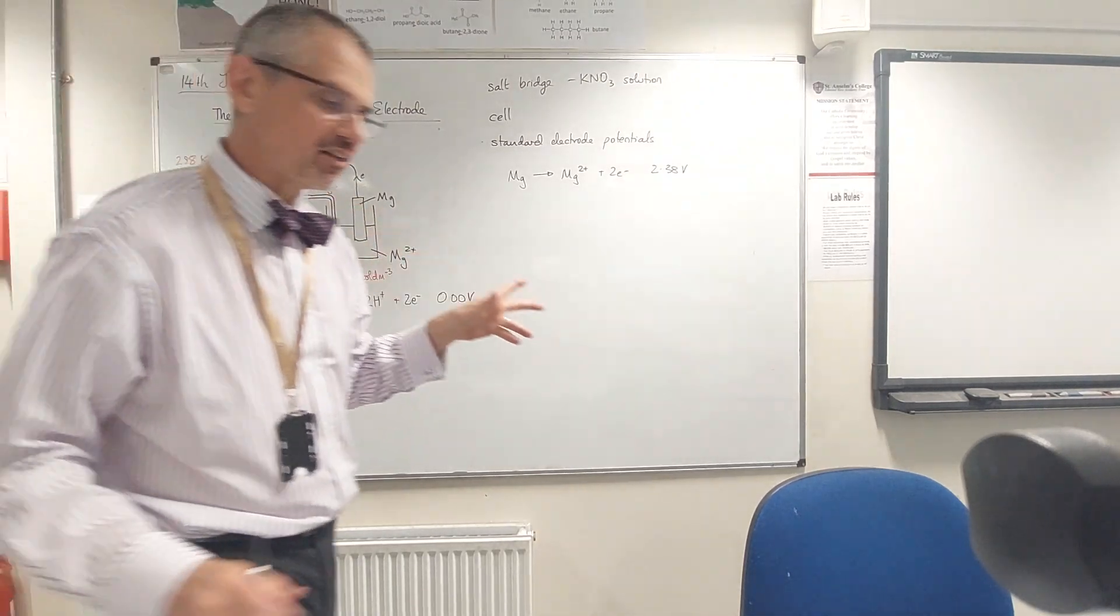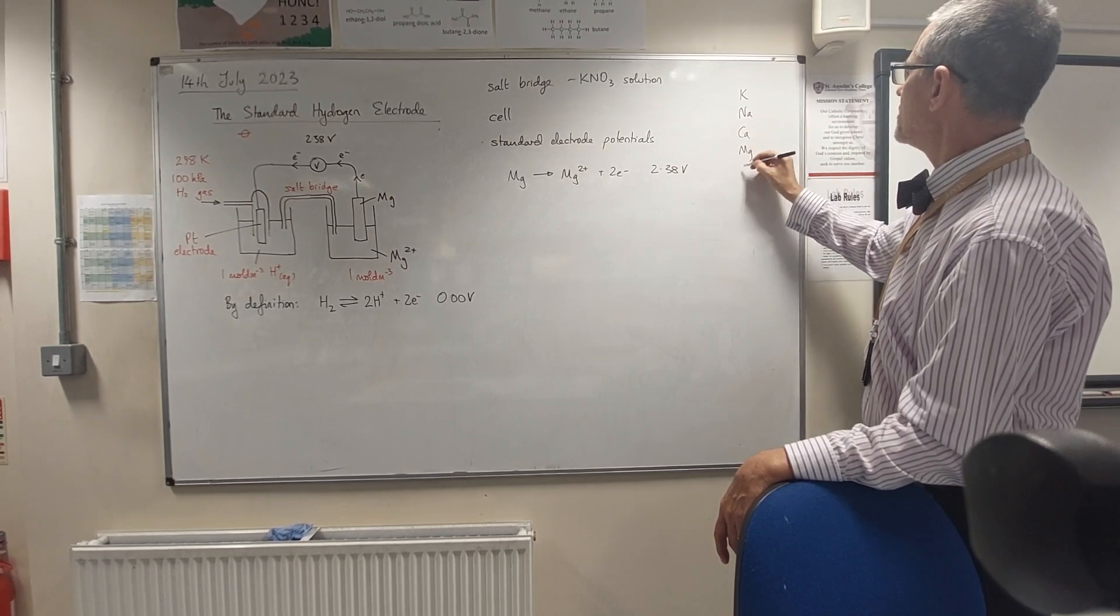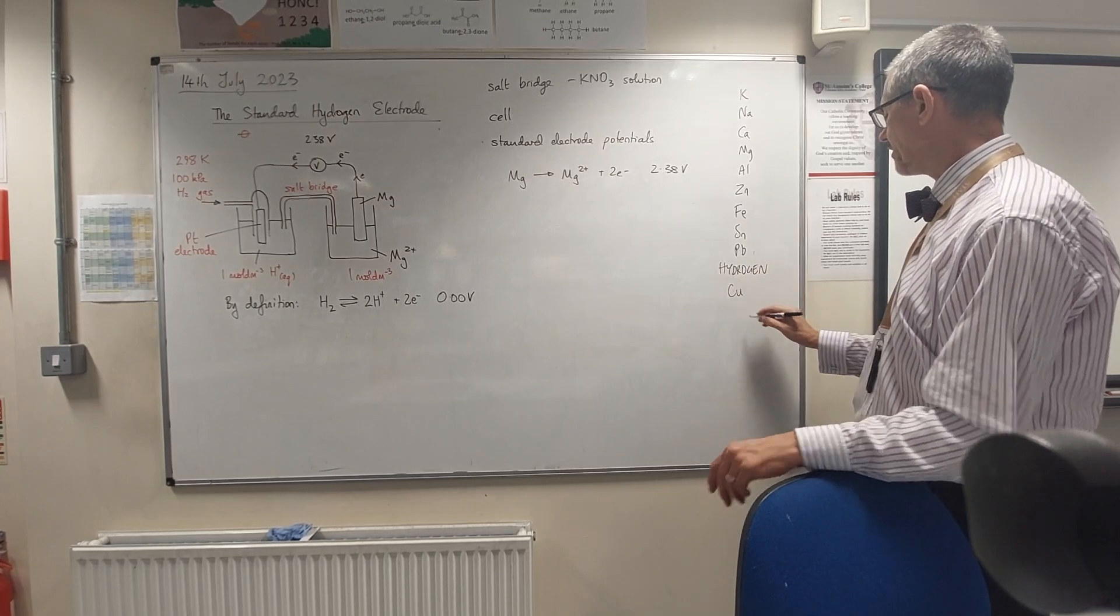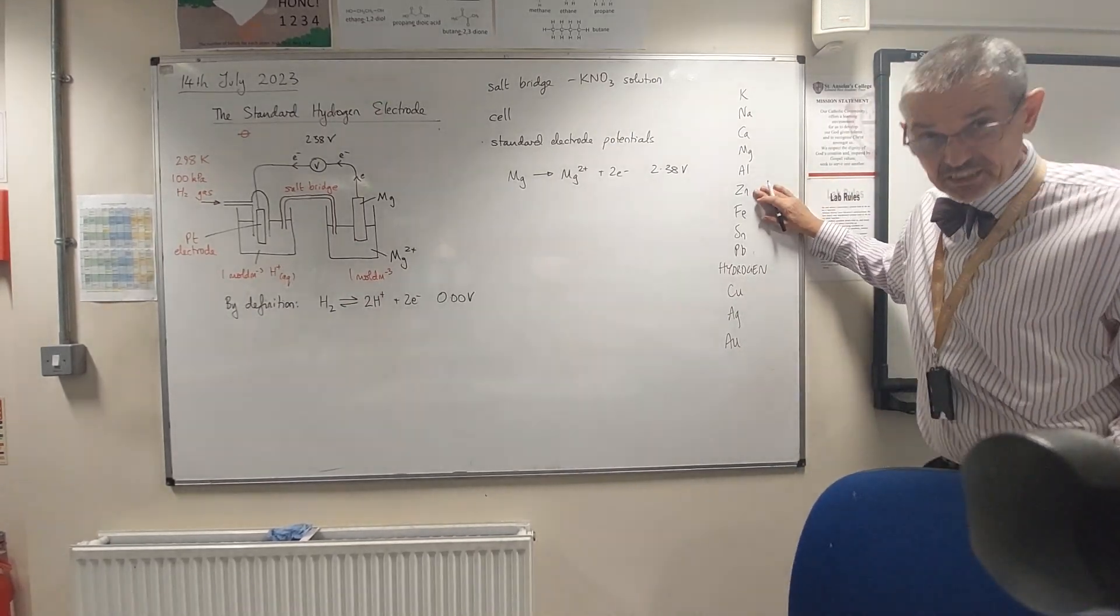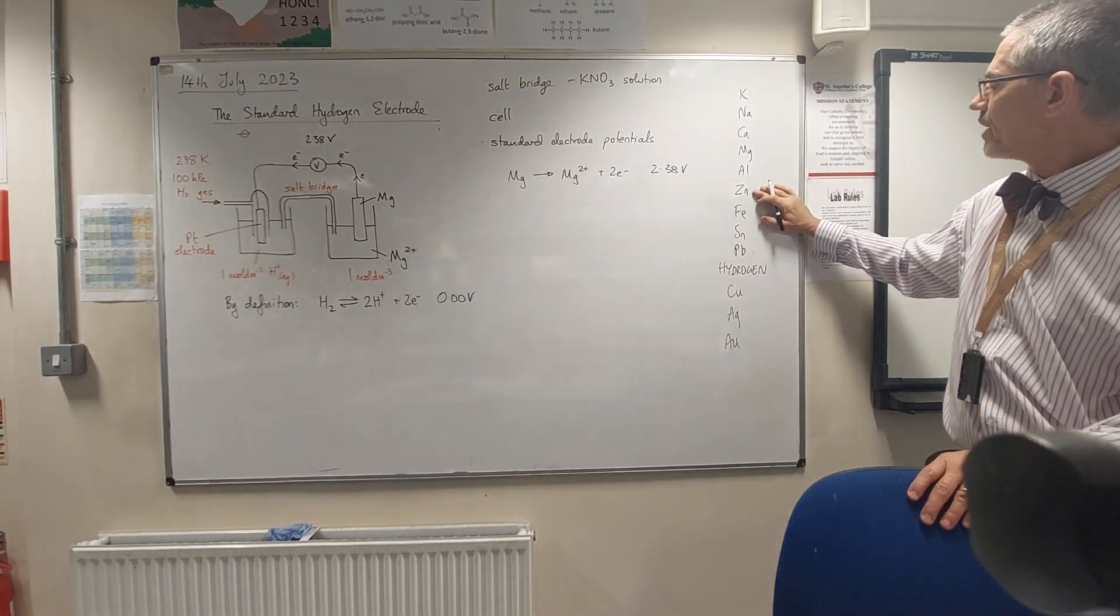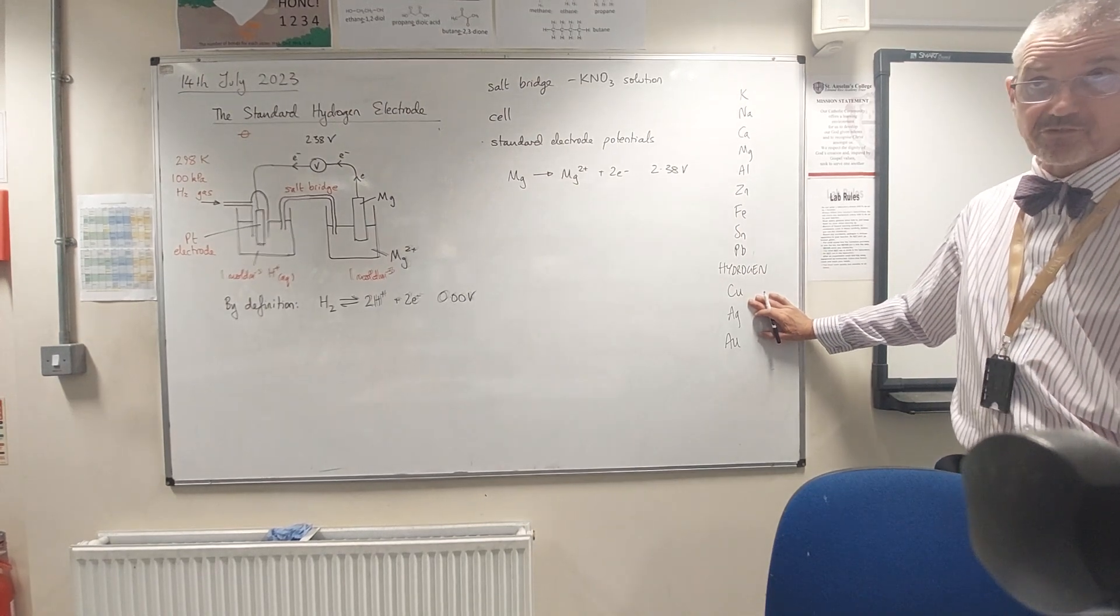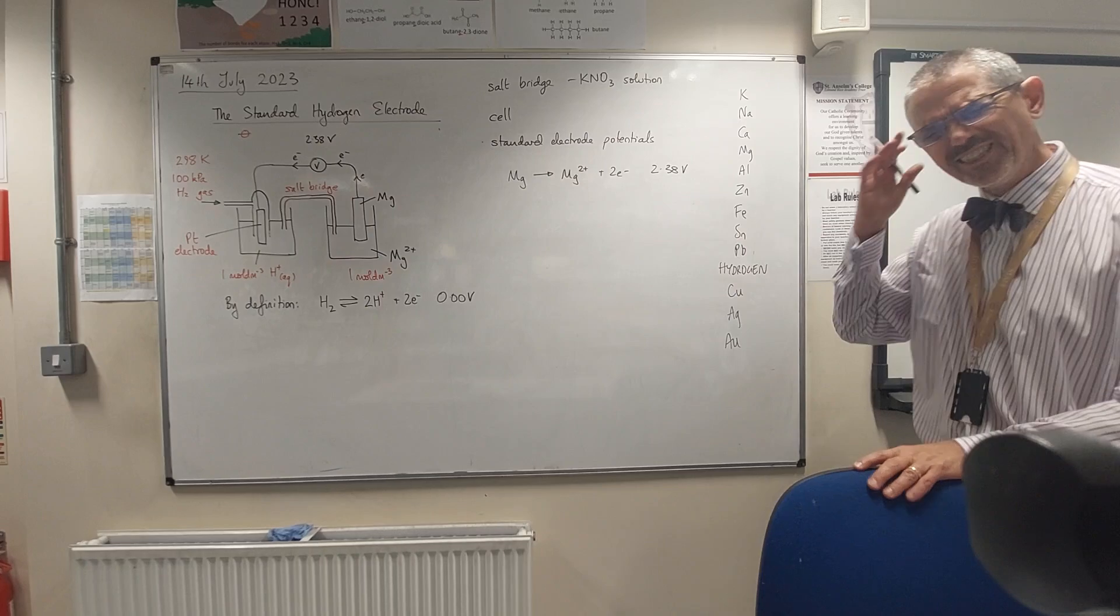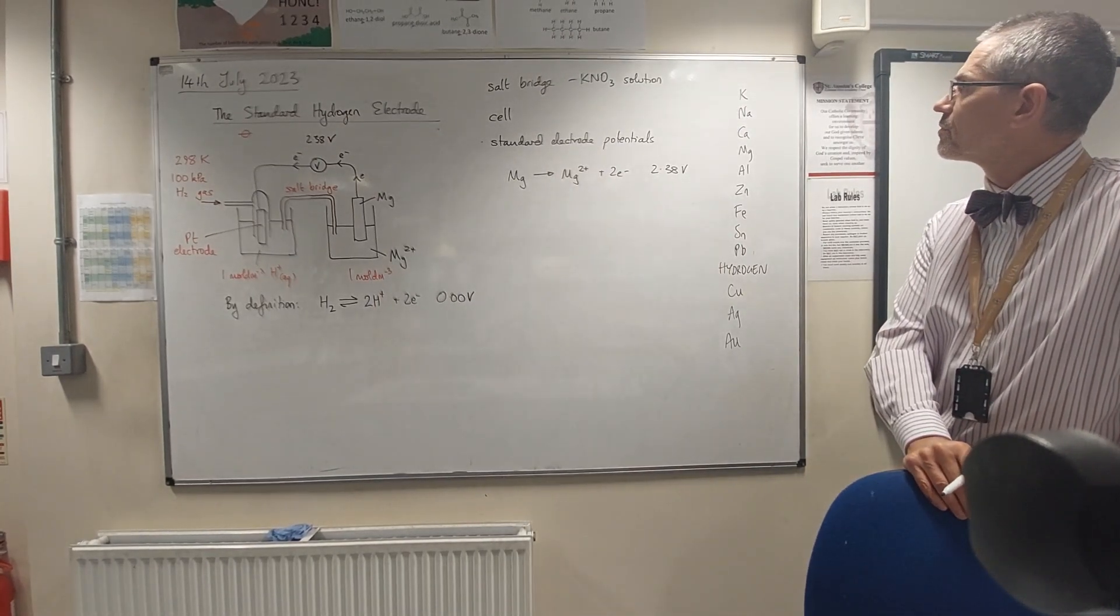Let's just remind ourselves of our reactivity series. We've got the reactive metals at the top, and then calcium, magnesium, aluminum, zinc, iron, tin, lead, hydrogen goes in there in the reactivity series, and then we have copper, silver, and gold and so on. If I drop a piece of zinc into some acid it'll react - zinc and hydrochloric acid will make zinc chloride and hydrogen gas. If I drop copper into acid nothing happens because hydrogen's more reactive than copper. I could use hydrogen gas to extract copper from its ore. Knowing where metals are in the reactivity series is actually still quite helpful.